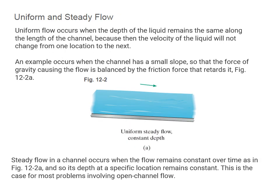First we will look at uniform and steady flow. Uniform flow occurs when the depth of the fluid remains the same along the length of the channel, so the velocity does not change from one location to another. This often occurs when the channel has a small slope such that the force of gravity causing the flow is balanced by the force of friction that retards it. Steady flow occurs when the flow remains constant over time, so depth at a specific location remains constant. This is the case for most problems involving open channel flow.